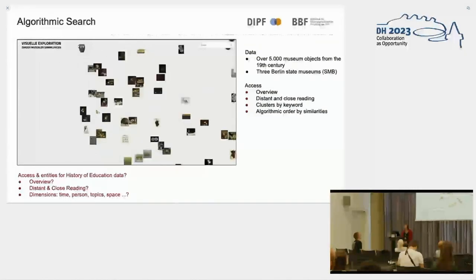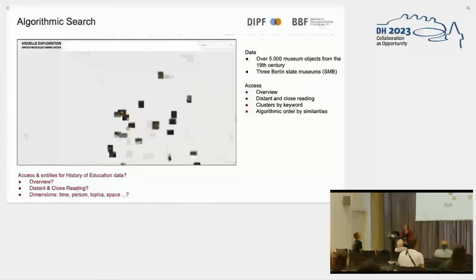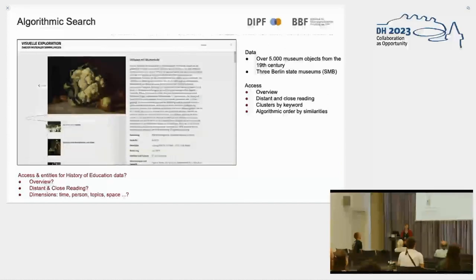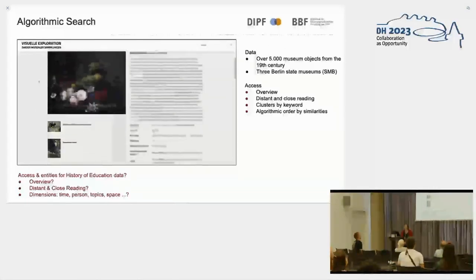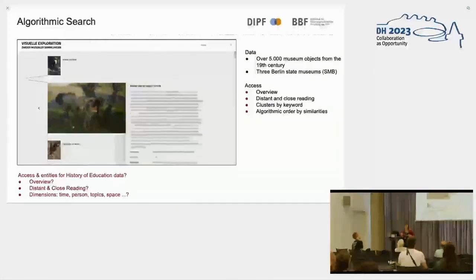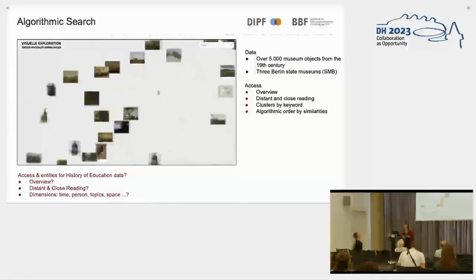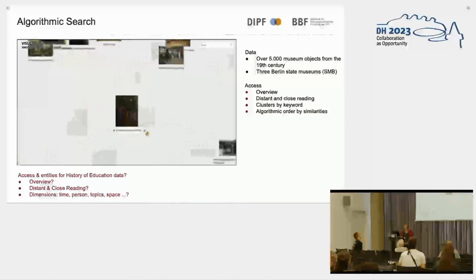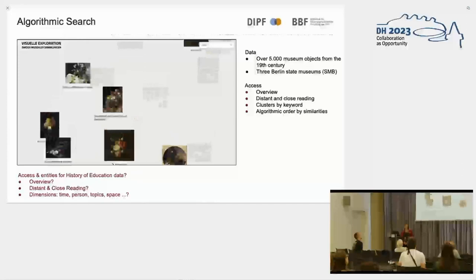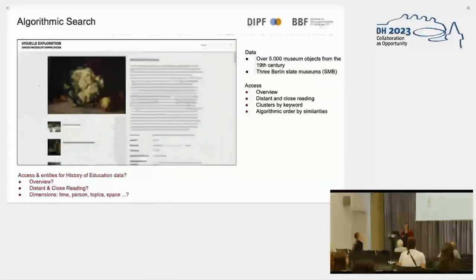This idea from the research group reminded me of the algorithmic search — a collaboration of the UC Lab and three Berlin state museums. It also has an algorithmic ordering by similarities as an entry point to the visualization, and afterwards offers details on demand with detailed information on single objects. Mark-Jan Gudau created this visualization with others, so if you have questions specifically about that, feel free to ask him.